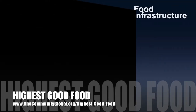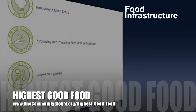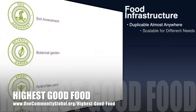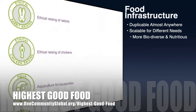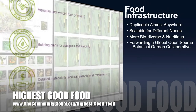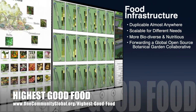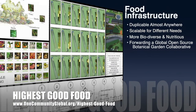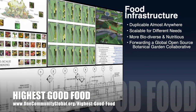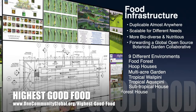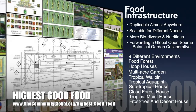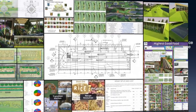One Community's Approach to Highest Good Food is duplicable almost anywhere, scalable for different needs, more biodiverse and nutritious, part of forwarding a global open source botanical garden collaborative, and includes nine different free shared and duplicable growing environments.